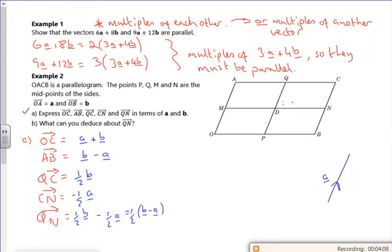What's part B on about then? So B says, what can you deduce about QN? Well, B minus A is the vector AB. So for part B, if I just compare the B minus A bit here, we know it's parallel to the vector from A to B. But if you look, it's only half the length though. So it's parallel to the vector AB, but only half its length.